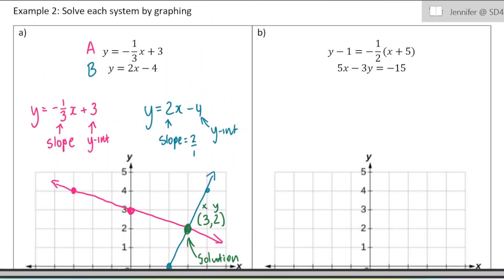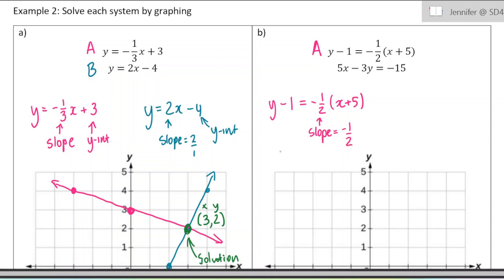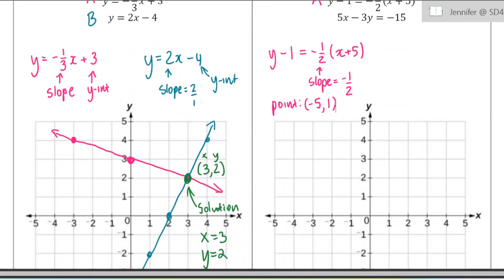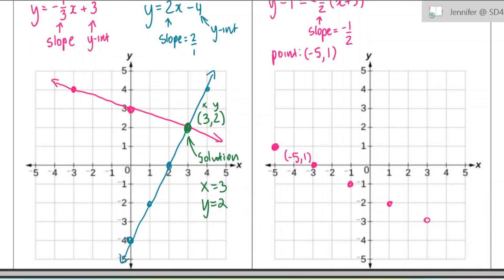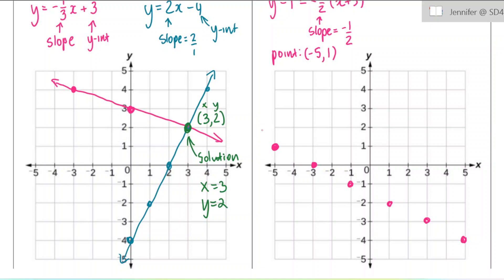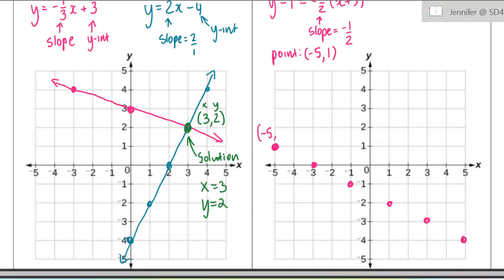The top equation in the next example is written in point-slope form — I'll call this equation A and do it in pink. In this format, we are given the slope, negative one-half, and a point on the line: negative 5, 1. Remember, you do have to change the signs of those coordinates — that's why I used negative 5, because it says x plus 5. So negative 5, 1 is our point. The slope is negative one-half, so I'm going to go down one, two over, down one, two over, and follow that all the way through. You do have to use the entire graph, because your solution could be anywhere on it — you don't want to just graph part of the line.